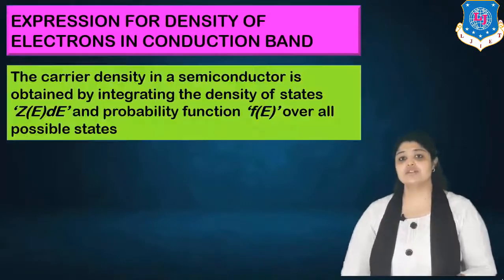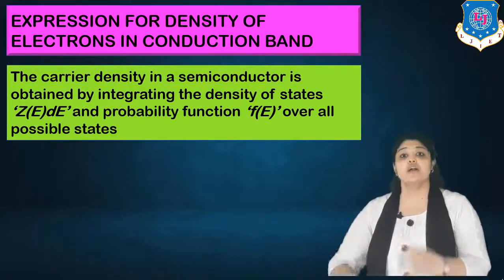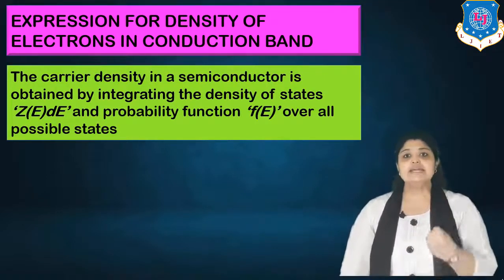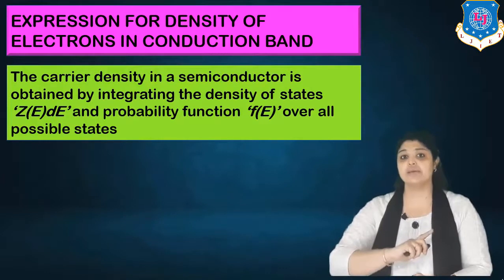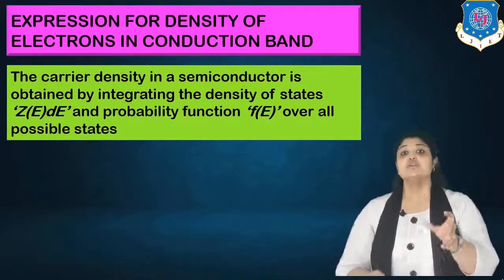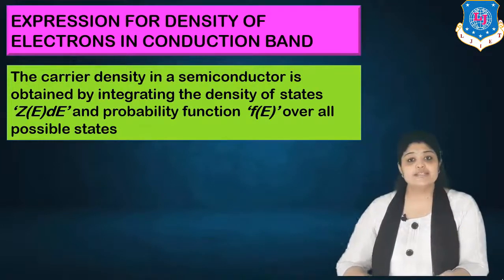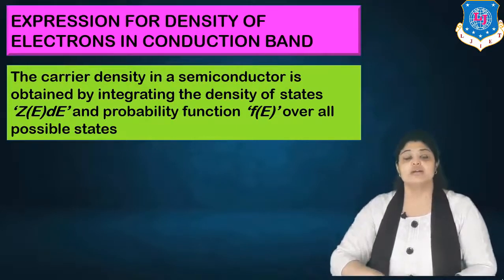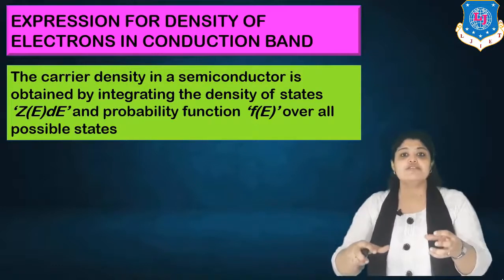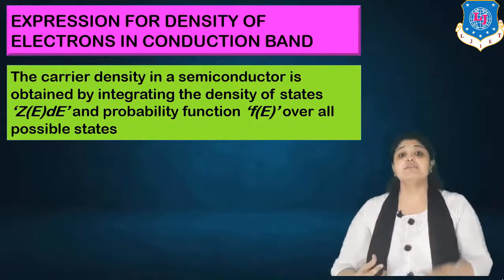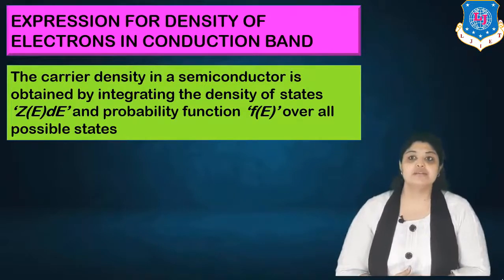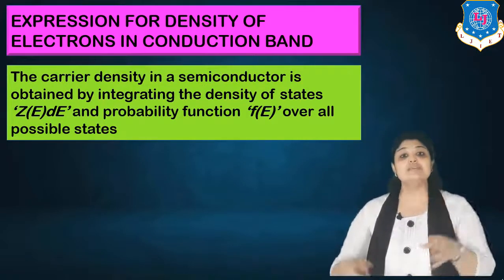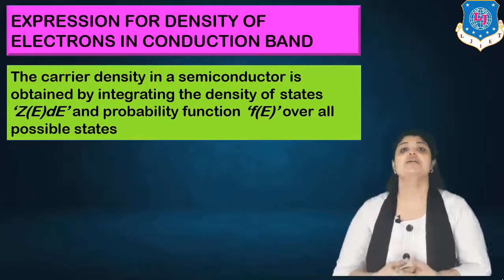To find the density of electrons in the conduction band, carrier density in a semiconductor is obtained by integrating the density of states Z(E)dE — a topic discussed in electronic materials. We need to find the available energy states and multiply by the probability function: how many energy states are available and what is their occupancy. For example, if there are 1000 energy states and 800 are filled, there are 1600 electrons, since one energy level can hold only 2 electrons.